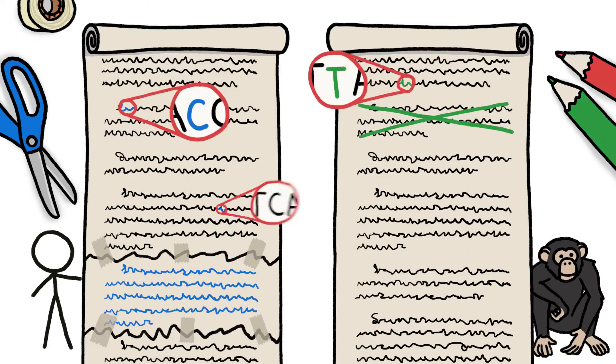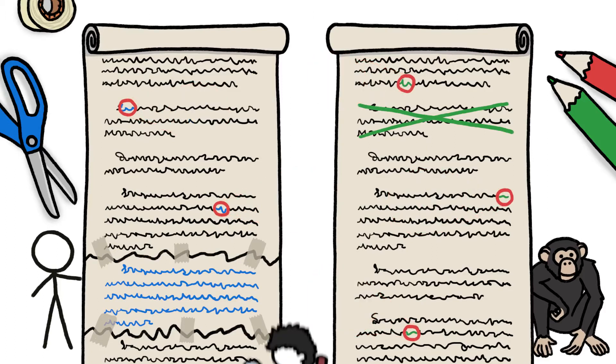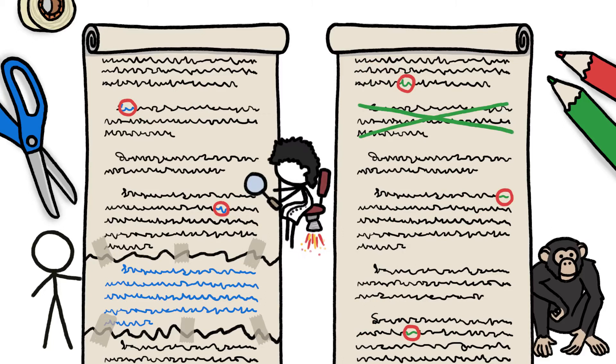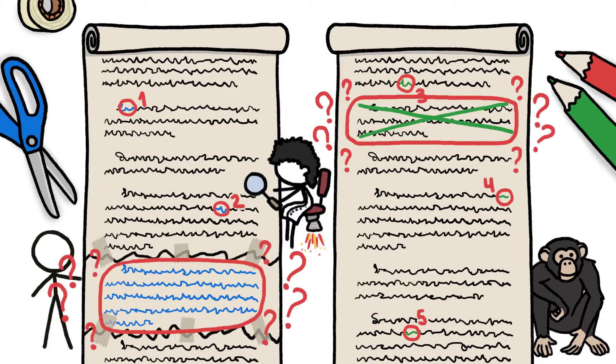Throughout the scrolls, tiny mutations swapped one letter for another. When researchers sat down to compare the chimp and human genomes, those single letter differences were easy to tally. But the big mismatch sections weren't.